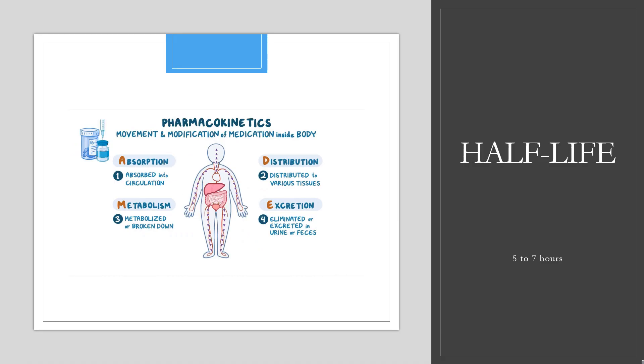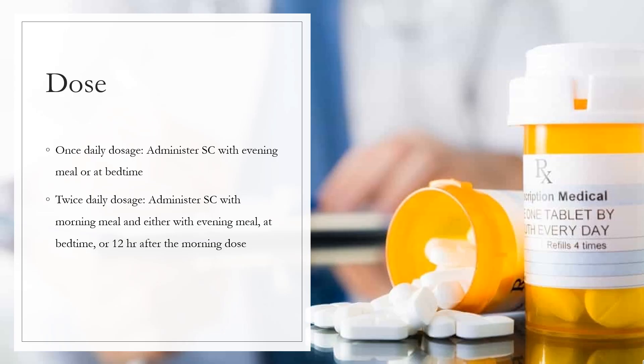Half-life: After subcutaneous administration in patients with type 1 diabetes, insulin detemir has a terminal half-life of 5 to 7 hours depending on dose. Dose for type 1 or 2 diabetes mellitus: Once daily dosage, administer subcutaneously with evening meal or at bedtime. Twice daily dosage, administer with morning meal and either with evening meal, at bedtime, or 12 hours after the morning dose.